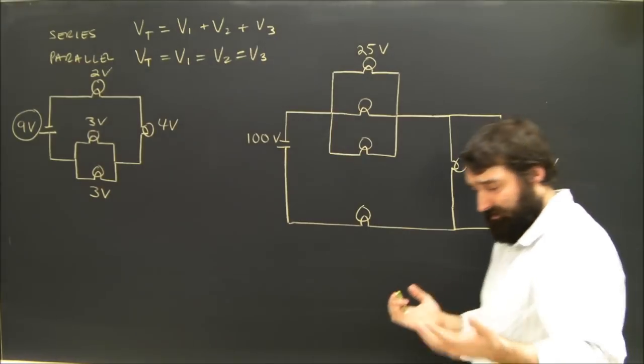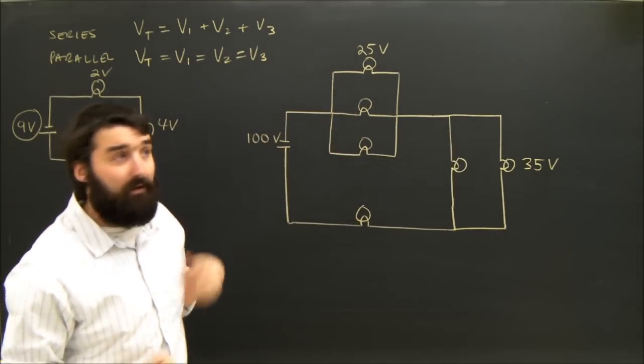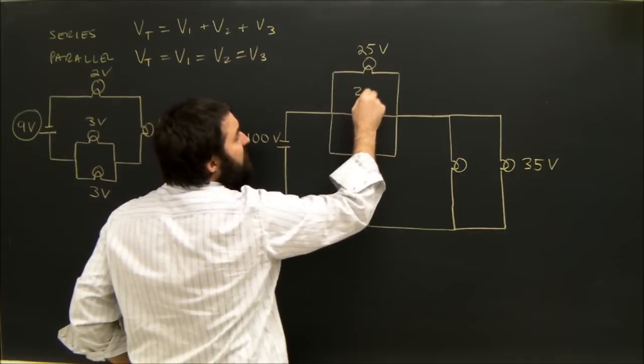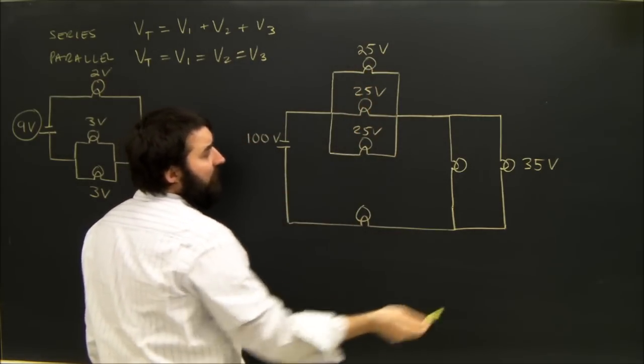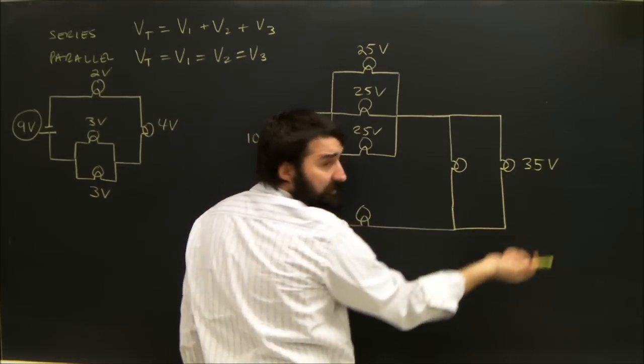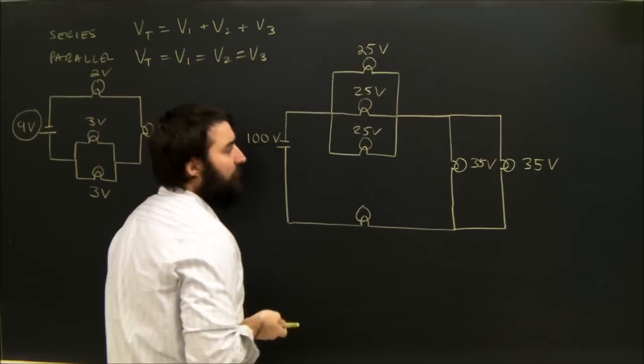Let's take a look at this second circuit just to make sure that we can cement our knowledge here. We've got 3 connected in parallel. Right away, I know that their voltages have to be the same. If they're parallel, the voltages are equal. Over here, I've got 2 bulbs that are also connected in parallel. If this is 35 volts, this guy's gotta be 35 volts. No problem.